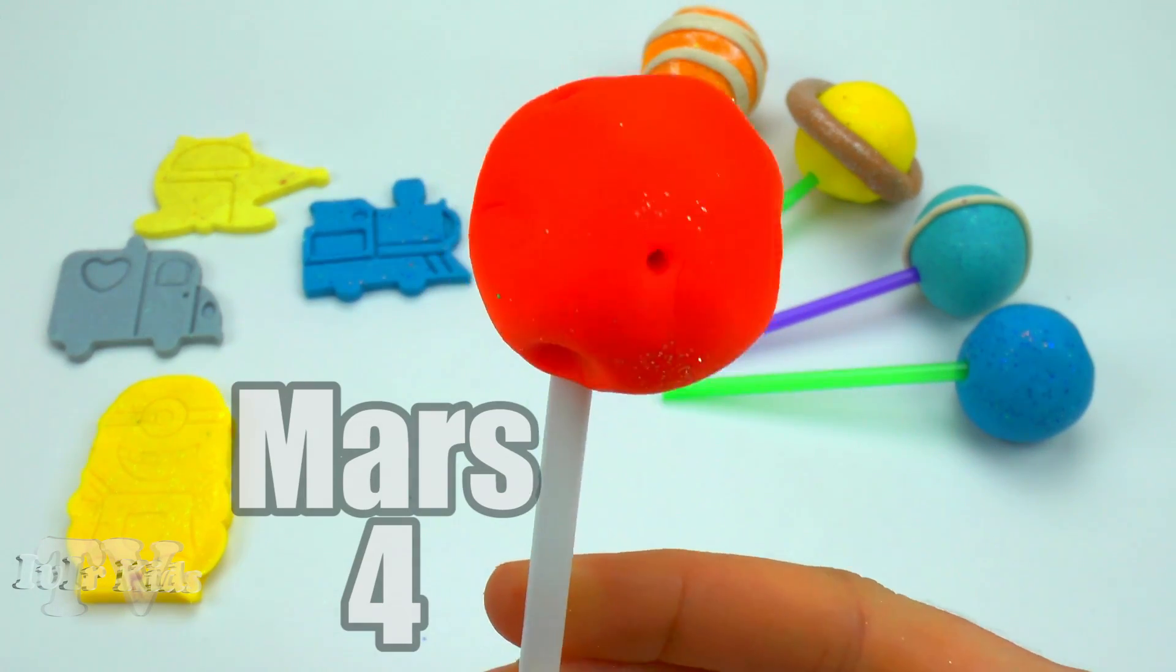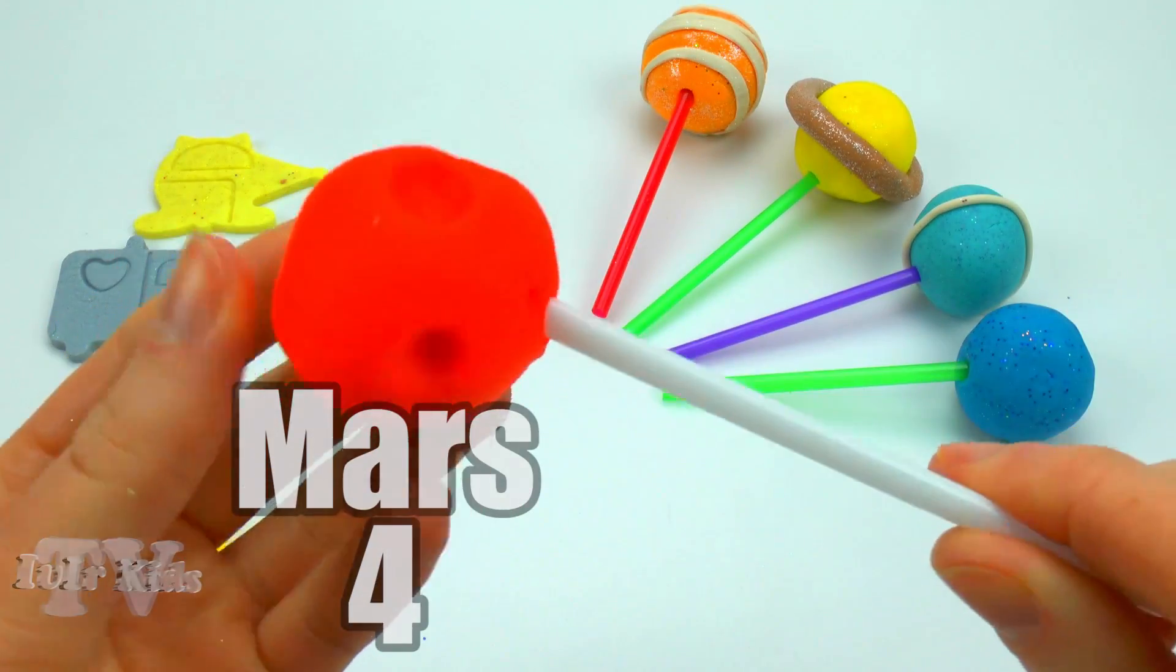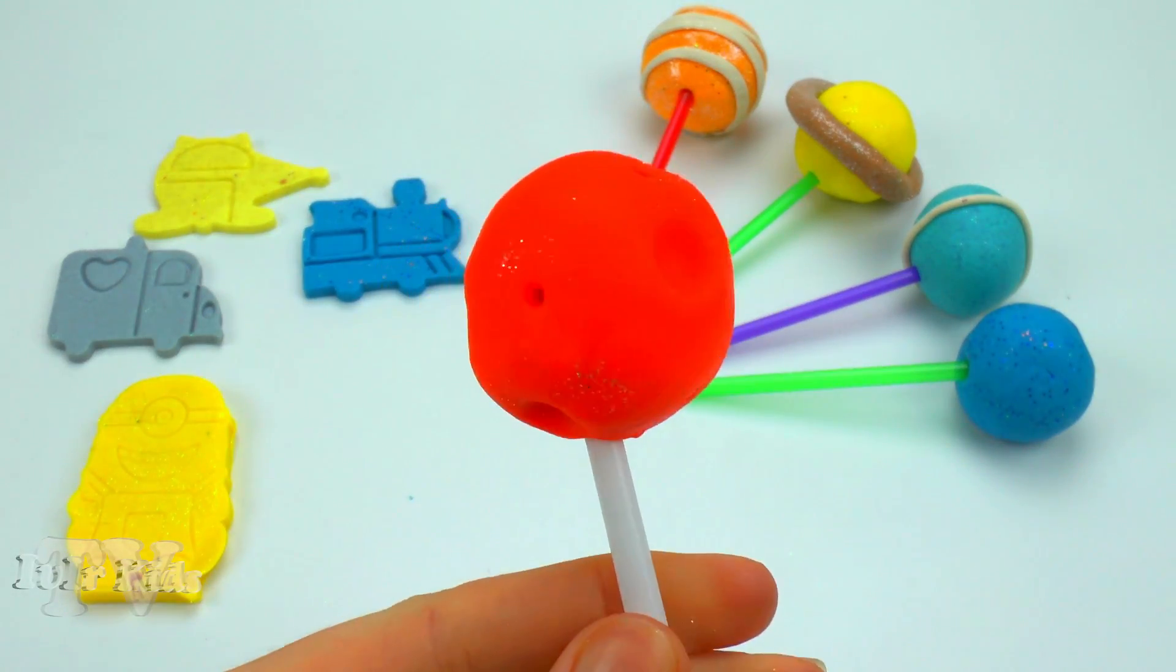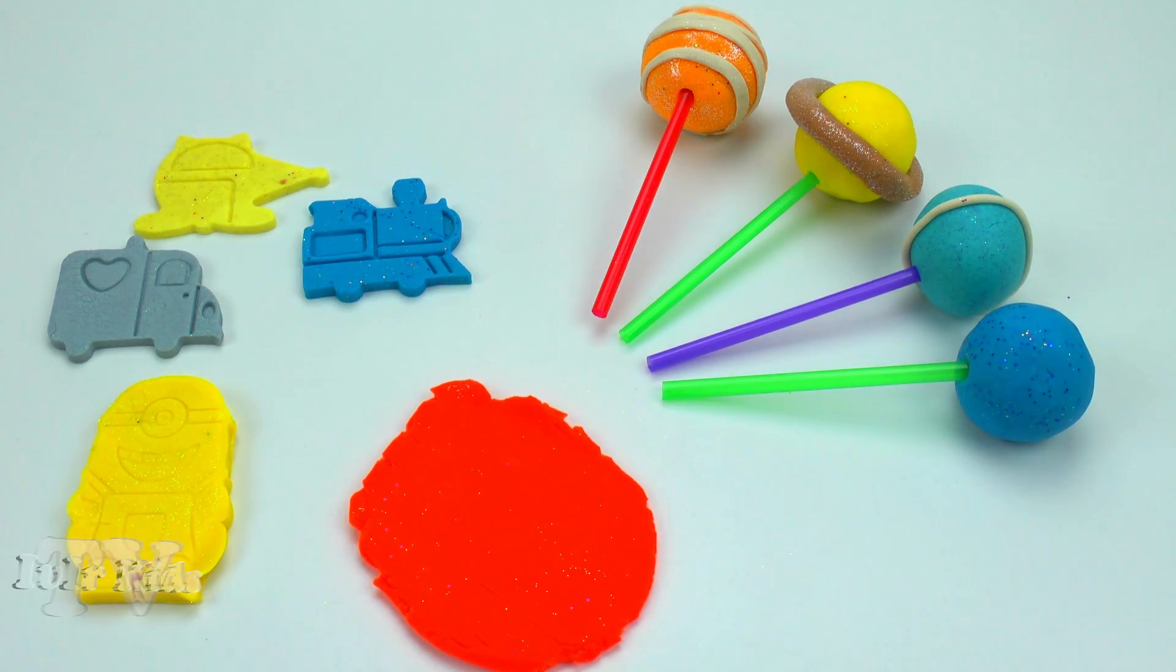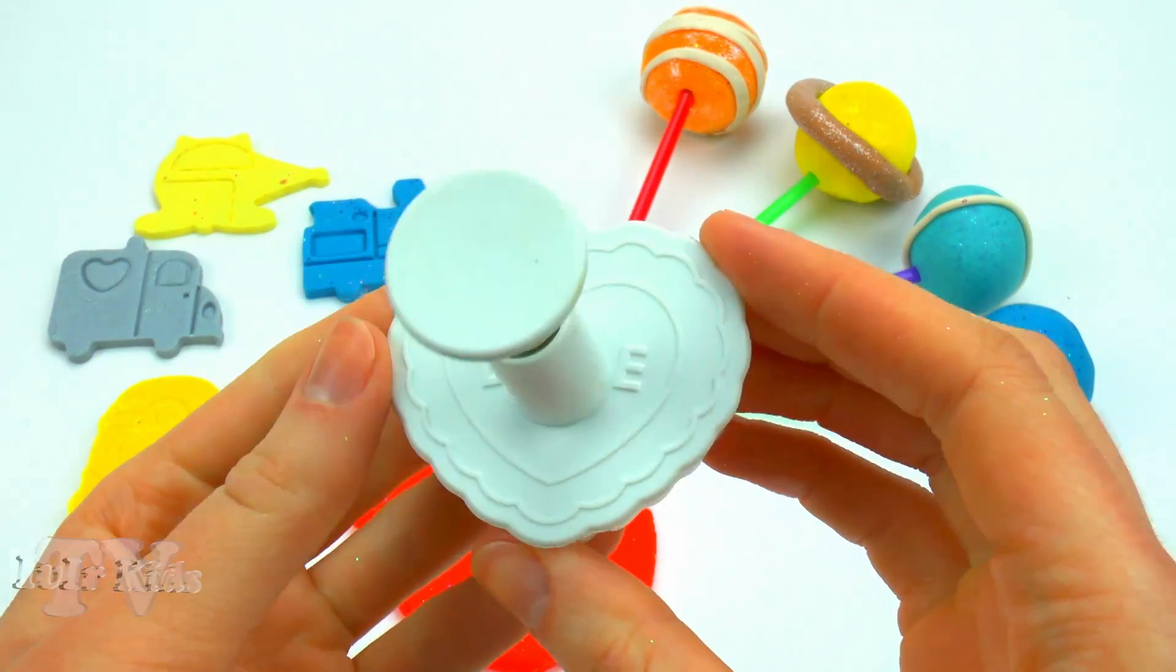Mars. The fourth in the distance from the Sun planet of the solar system. Named after Mars, the ancient Roman god of war. Sometimes Mars is called a red planet because of the reddish color of the surface.